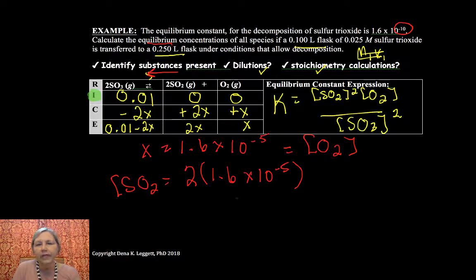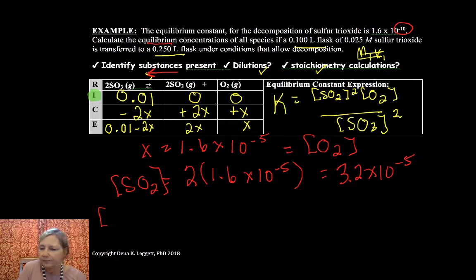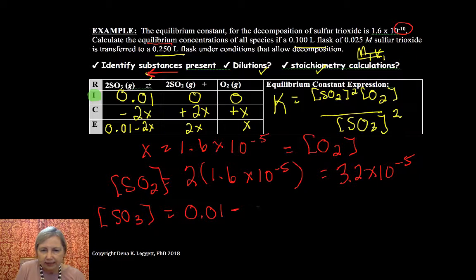And it says calculate all equilibrium concentrations. So that's my concentration of O2. My concentration of SO2 is equal to 2 times 1.6 times 10 to the minus 5th, and so that's 3.2 times 10 to the minus 5th. And my concentration, I'm going to show this in a little bit more detail, SO3 is equal to 0.01 minus 2X, which we've determined is 3.2 times 10 to the minus 5th.